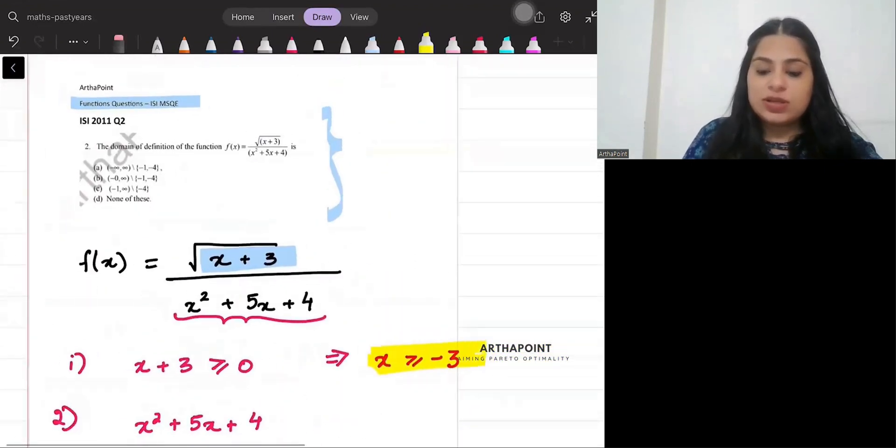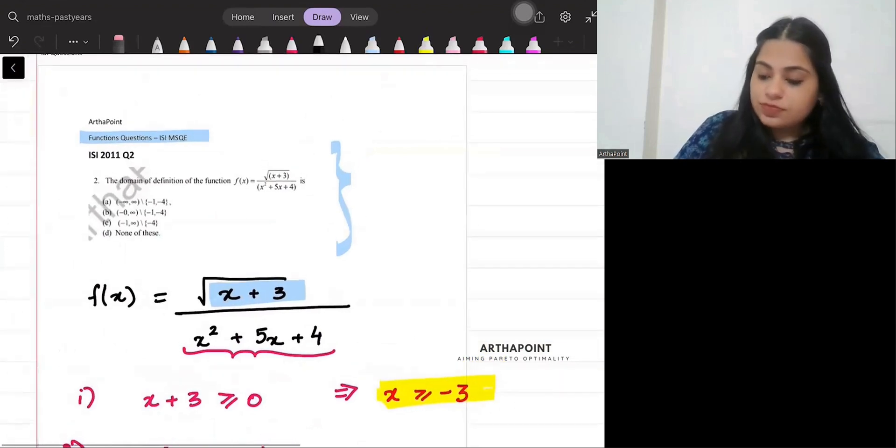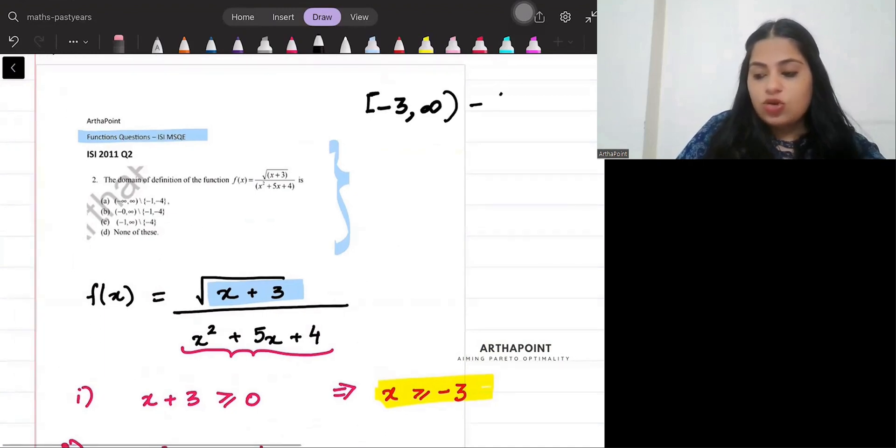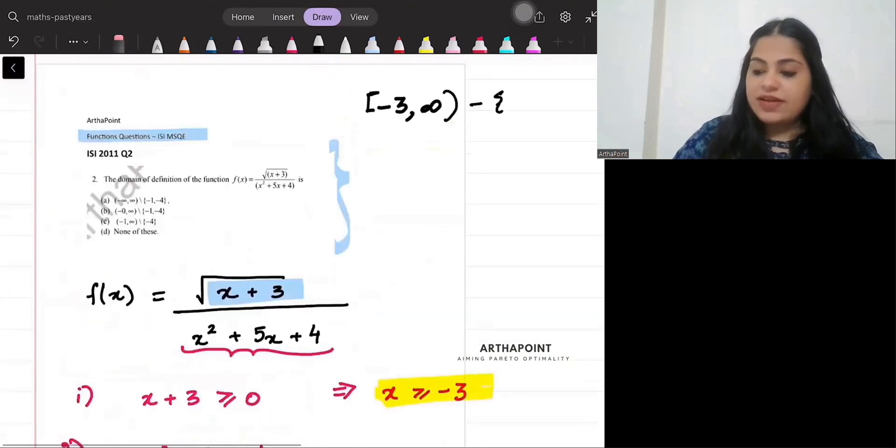So we have got two values that x cannot be minus 1 and x cannot be minus 4, and x should also be greater than or equal to minus 3. So we can write this as minus 3 included up to infinity, and 2 values I should not include: minus 1 and minus 4.